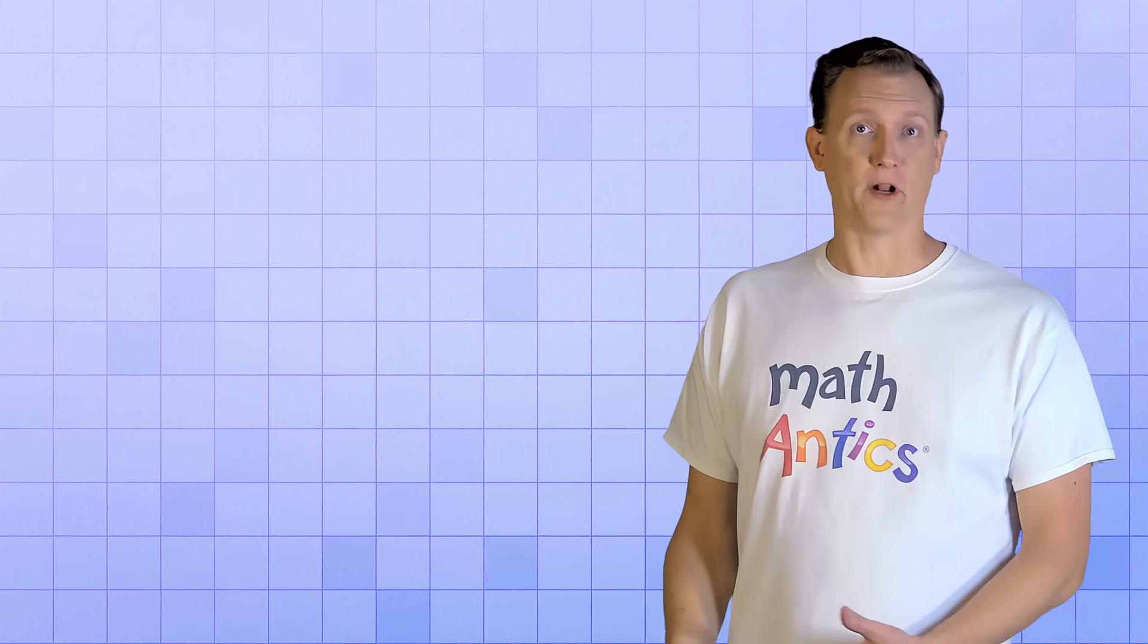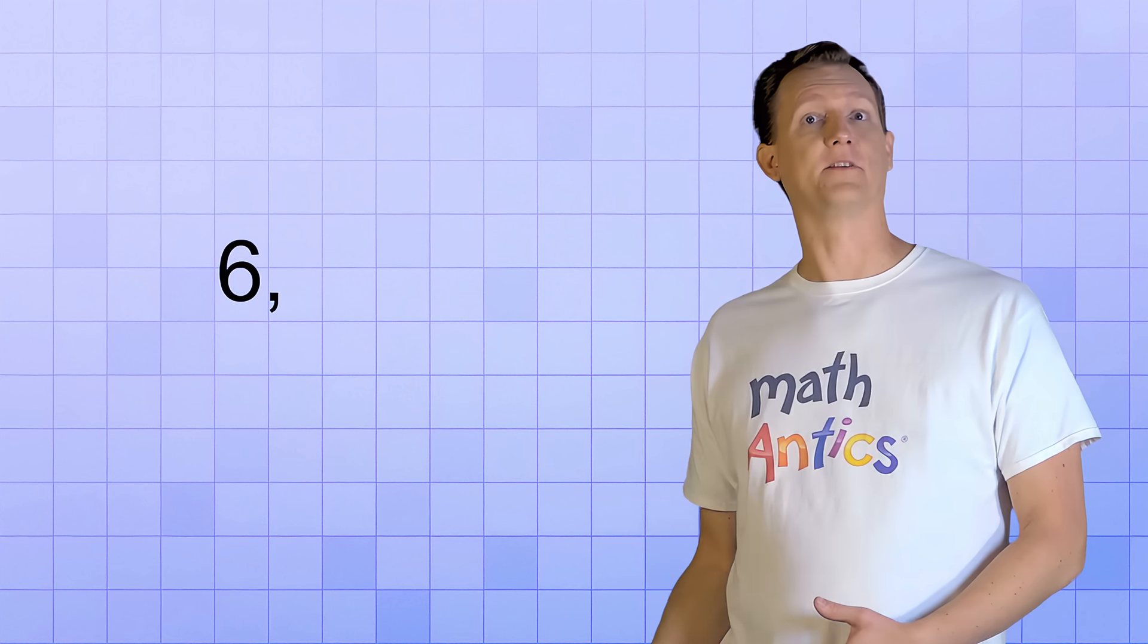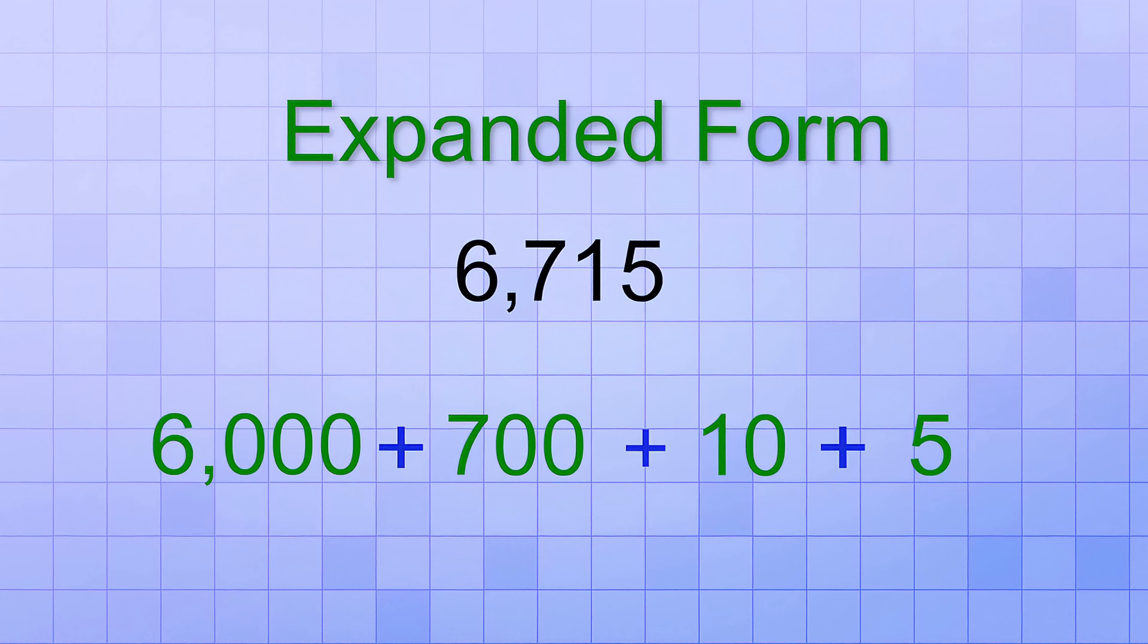Let's try writing another number in expanded form. 6,715. We can expand this into 6,000 because the 6 is in the thousands place, plus 700 because the 7 is in the hundreds place, plus 10 because the 1 is in the tens place, and 5 because the 5 is in the ones place. So the expanded form is 6,000 plus 700 plus 10 plus 5.